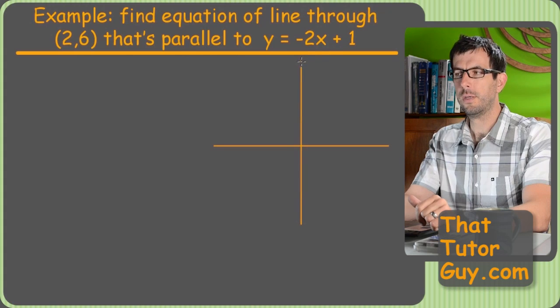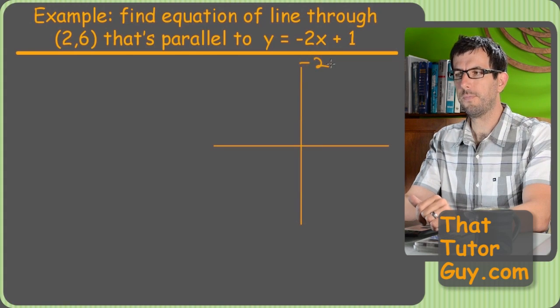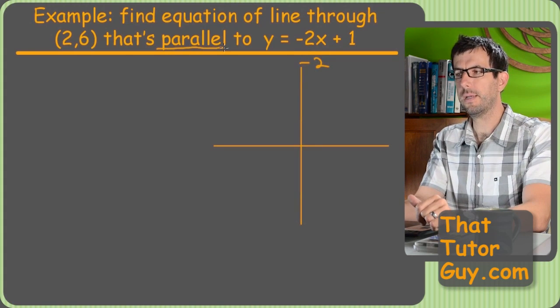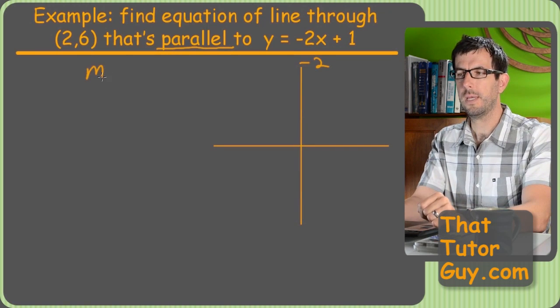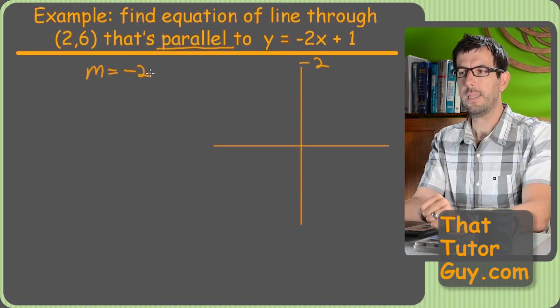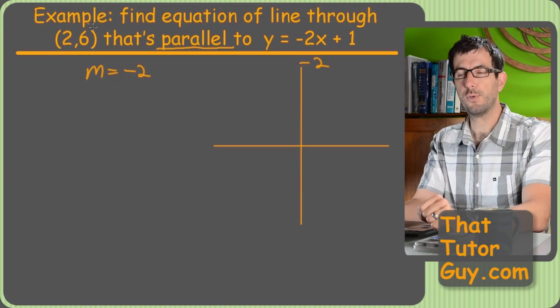So, the first thing we'll want to do is just figure out, hey, what was the slope of the original? So, if the original is negative two, and then this is a parallel situation, which means we want the same slope. So, our slope is also going to equal negative two.